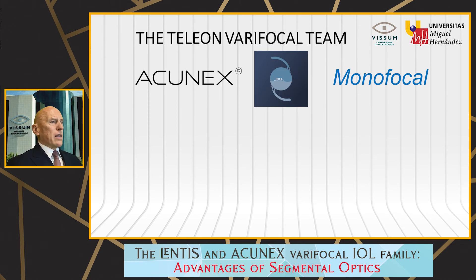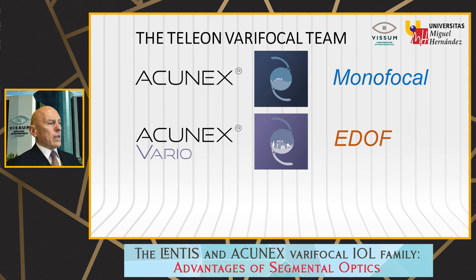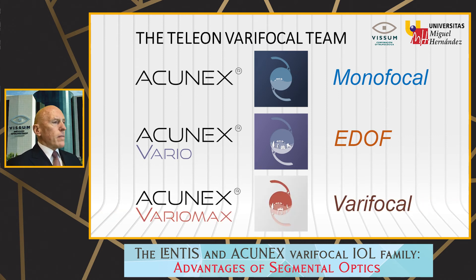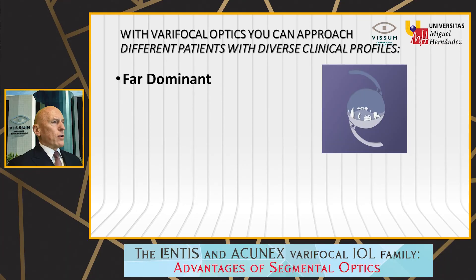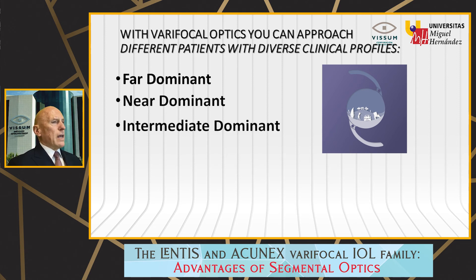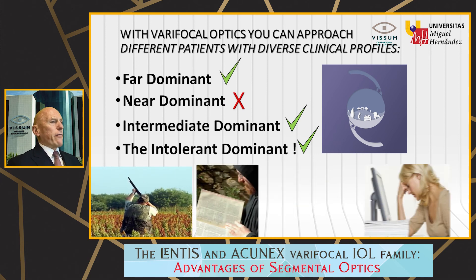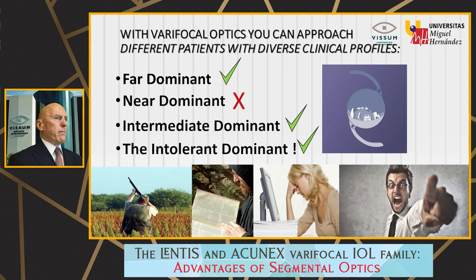This is how I now use the varifocal family. I use the Teleon lenses — an extension of previous technology using a new hydrophobic material, which in my opinion has several advantages. You have the monofocal AccuNex and the AccuNex Vario, equivalent to the lenses comfort, exactly the same lens but with blue filter. Then the AccuNex VarioMax, which is the M plus 3. With this combination, you achieve different profiles: far dominant is perfectly accomplished with the M plus 1.5 comfort and in the Teleon lens. Near dominant requires the high near vision arc of the M plus 3. Intermediate dominant is very frequent today and fully accomplished with the comfort lens. And for intolerant patients — those with highly specific demands who are very unwilling to tolerate photopsia or halos and glare — the M plus 1.5 is the answer.